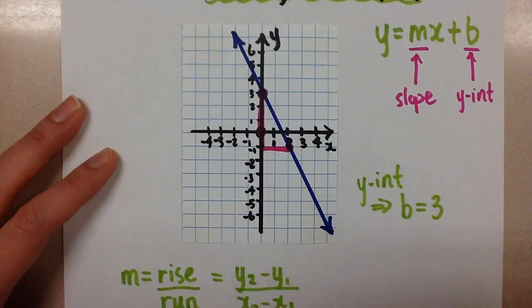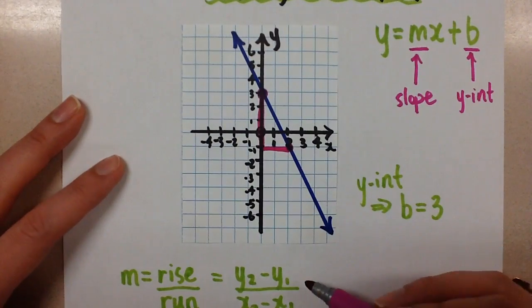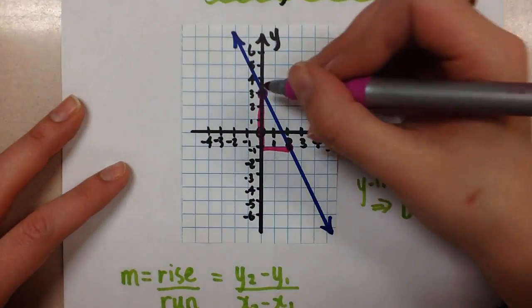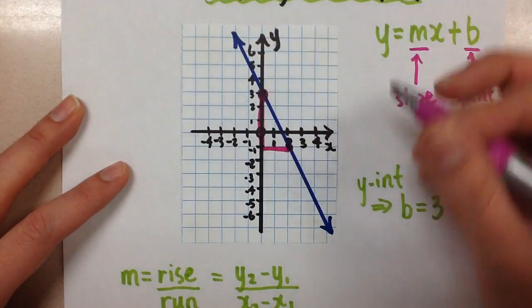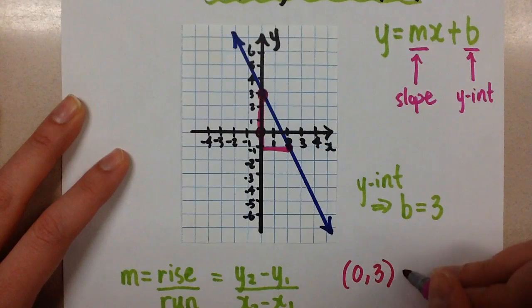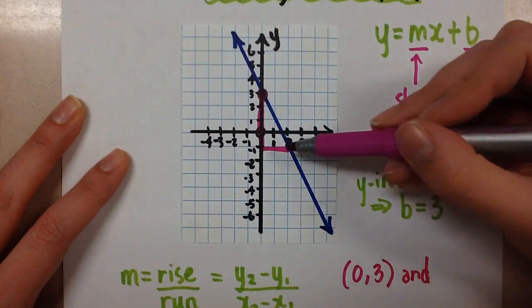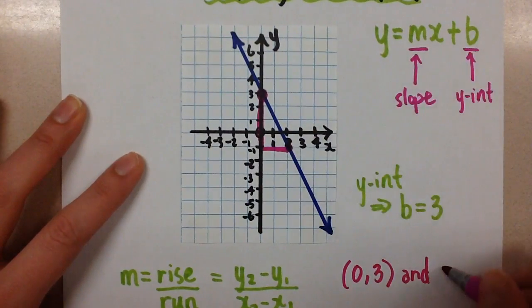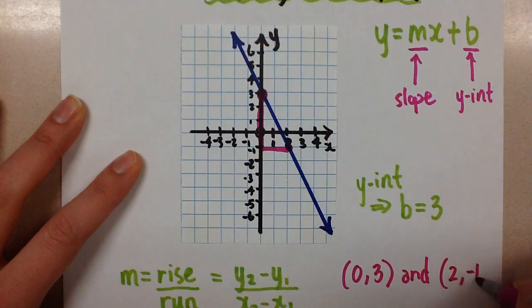I'm going to use this other formula today. So that uses the coordinates of the points. So I'm going to use this point right here, which is the point 0, 3. And then I'm also going to use this point here, which is the point 2, negative 1.